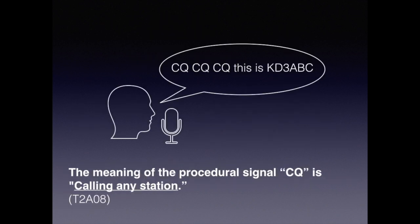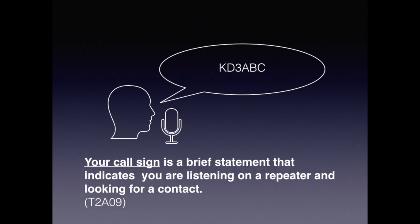CQ is a procedural signal that means calling any station. For example: CQ CQ, this is KD3ABC. The question is: the meaning of the procedural signal CQ is calling any station. When using a repeater, it's not necessary to call CQ. If you're getting on a particular repeater, all you have to do is give your call sign — for example, KD3ABC. The question is: your call sign is the brief statement that indicates you are listening on a repeater and looking for a contact.